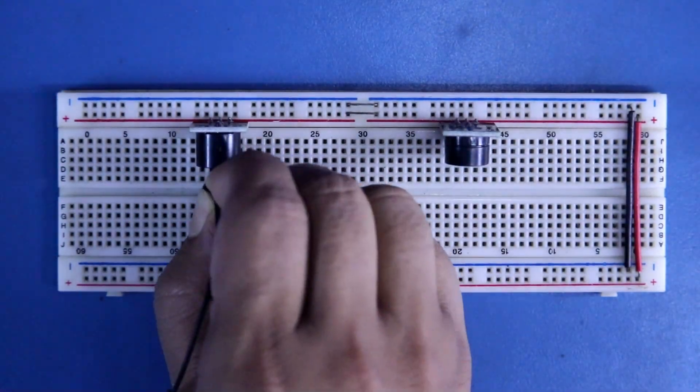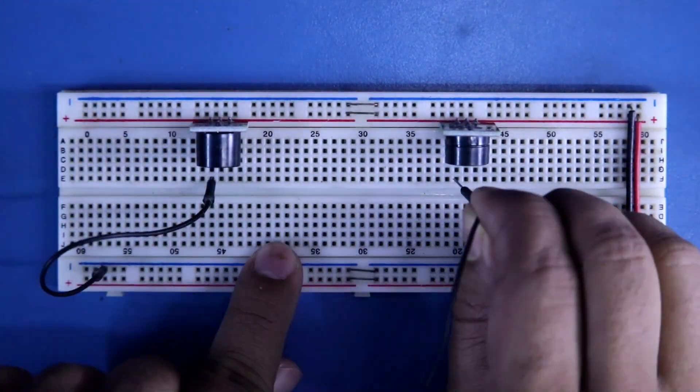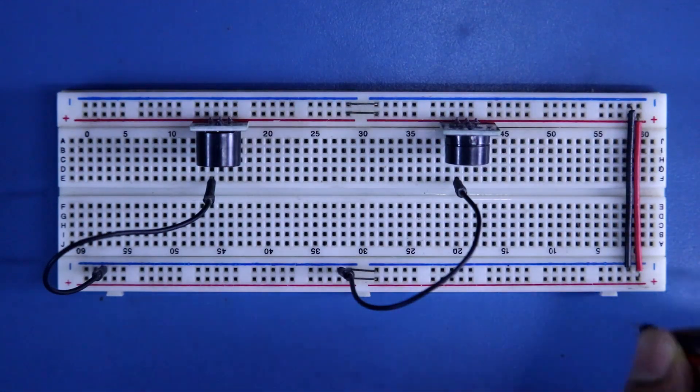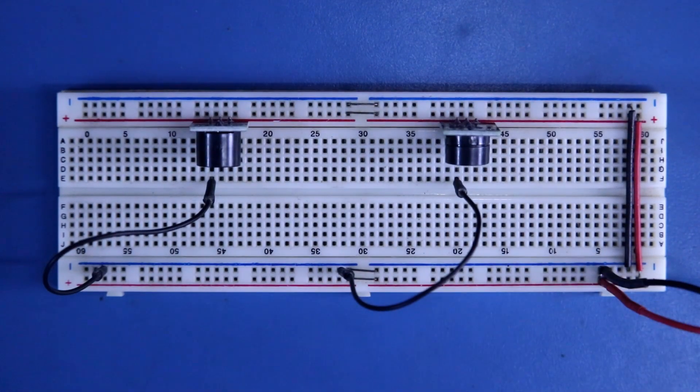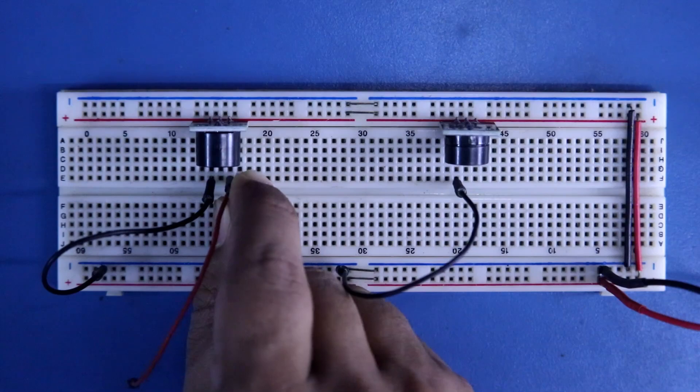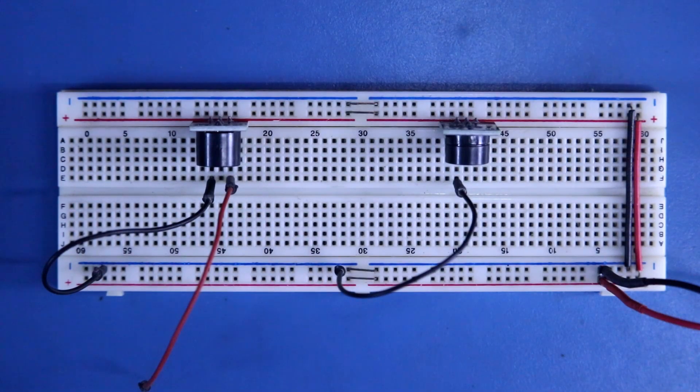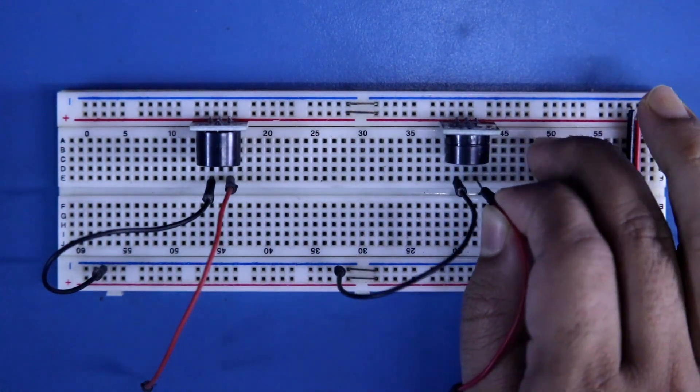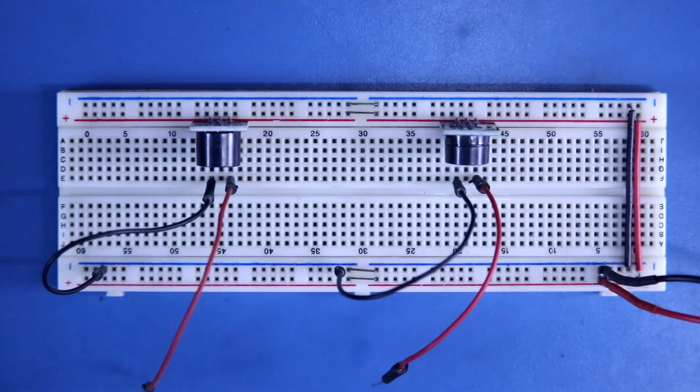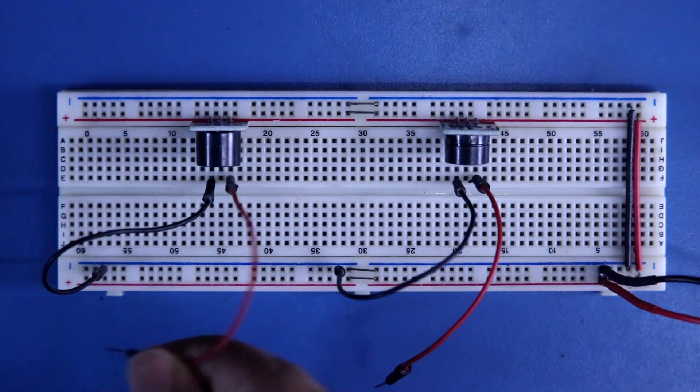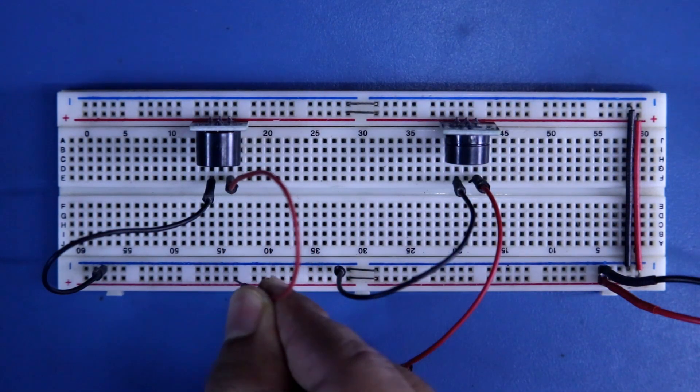I am connecting both the negative pins to the negative rail connecting 5V power supply. This is positive pin of the buzzer and for this also. So let's see what will happen if I connect this to the positive rail.